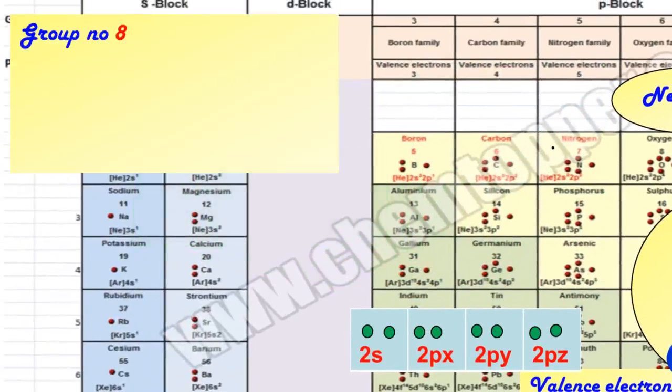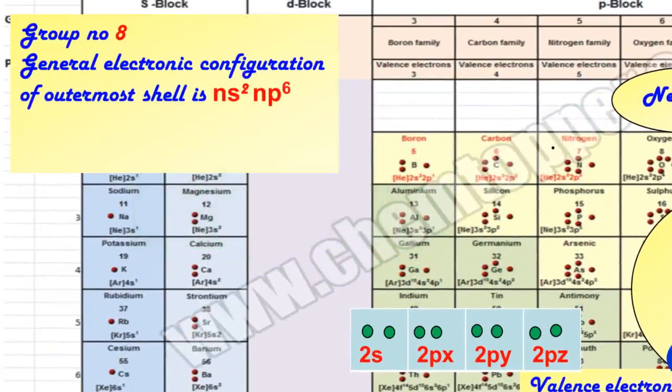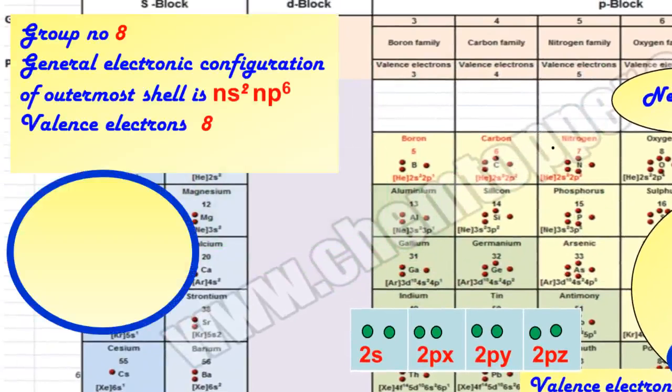Group 8 elements with general electronic configuration of NS2 and P6 with 8 valence electrons can all be represented with exactly same Lewis dot representation where we have 4 pairs of electrons placed around the symbol of the element.